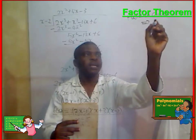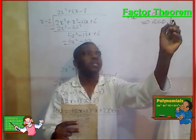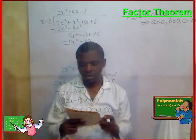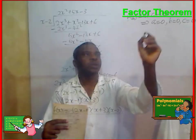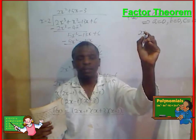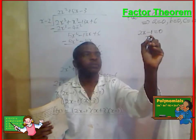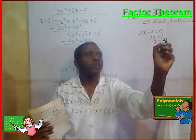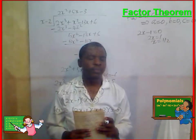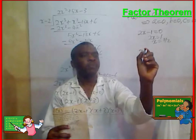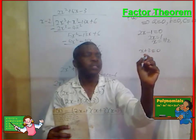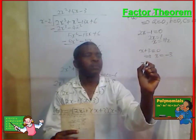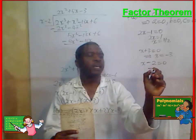This implies that either A is equal to 0, or B is equal to 0, or C is equal to 0. So if we assume A is equal to 0, we are saying that 2x minus 1 is equal to 0, so x is equal to 1, meaning x is equal to half. Or, x plus 3 is equal to 0, which implies x is equal to minus 3. Or, x minus 2 is equal to 0, which implies x is equal to 2.